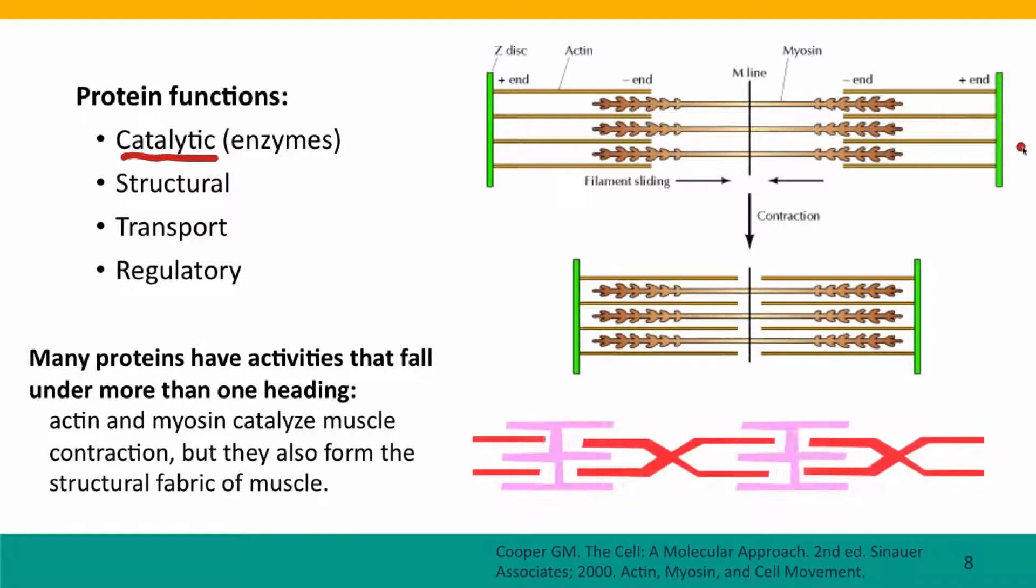For instance, here is the actin and myosin subunits of our muscles and these proteins are able to slide across each other, forming the shortening and lengthening the muscle. That's how muscle contracts. This is in a sense both catalytic because there's enzyme catalysis bringing about this movement and structural because these proteins are actually the physical structure of our muscles. Proteins also function in transport, in moving molecules in and out of cells and around in our bodies, and of course we've already talked quite a bit about how proteins can function in regulation, especially by recognizing and binding to particular DNA sequences.